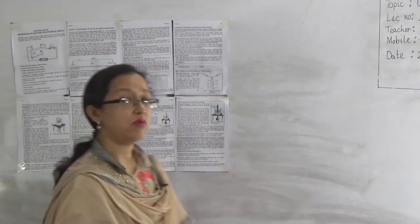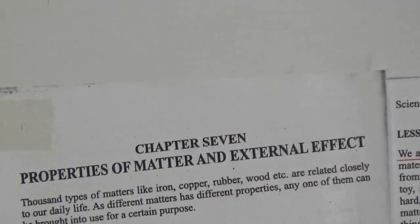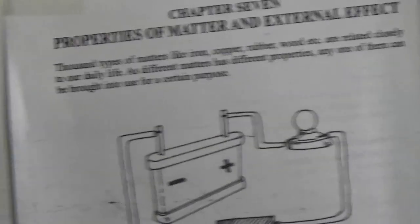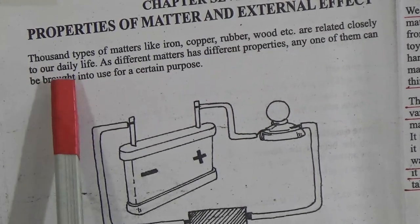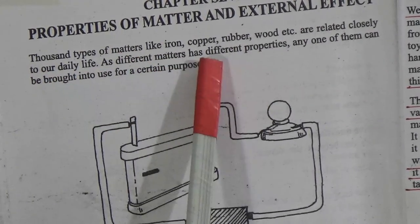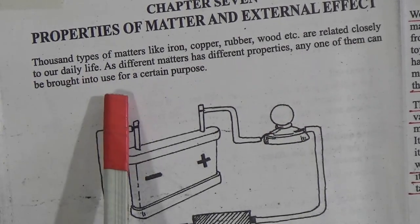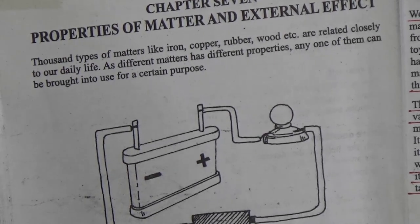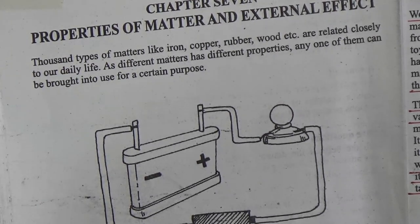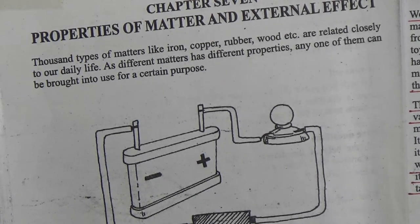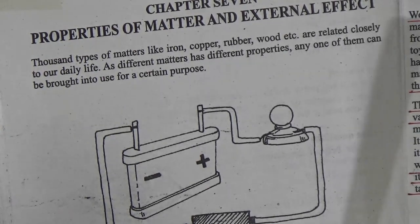The name of our chapter is 'Properties of Matter and External Effect.' In our environment there are thousands of types of matter like iron, copper, rubber, wood, zinc, molybdenum, plastic, glass, and many other things. Different matters have different properties, and any one of them can be brought into use for a certain purpose. We use these matters in different ways in our everyday life.